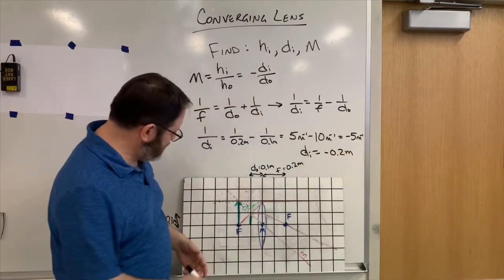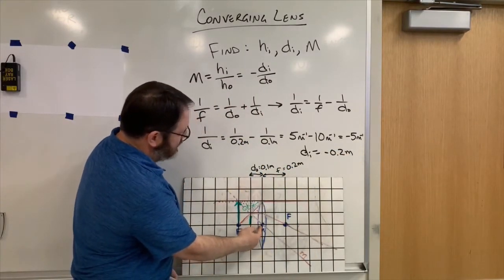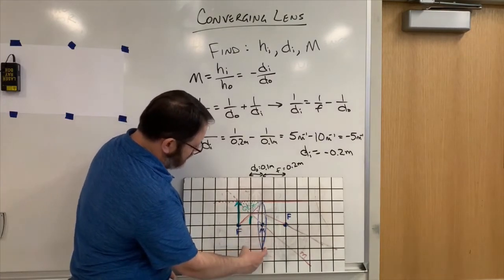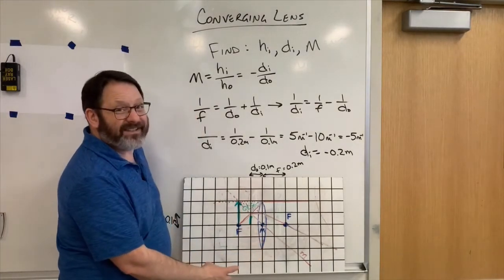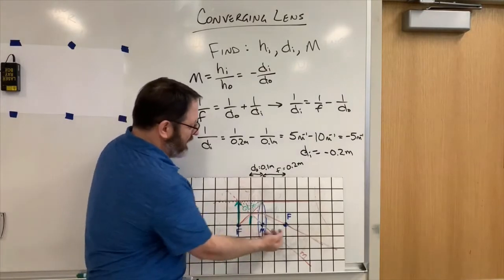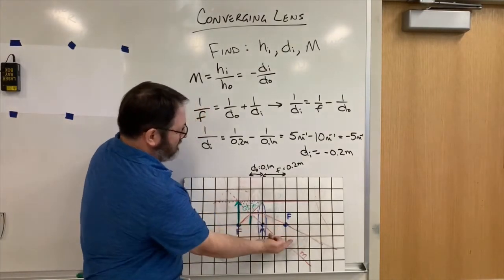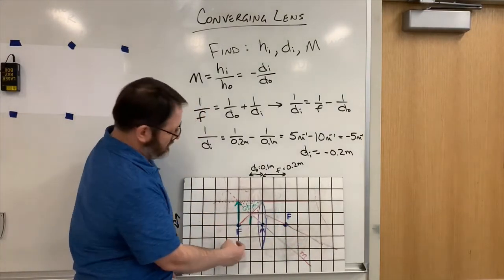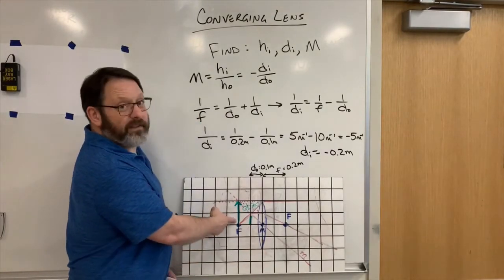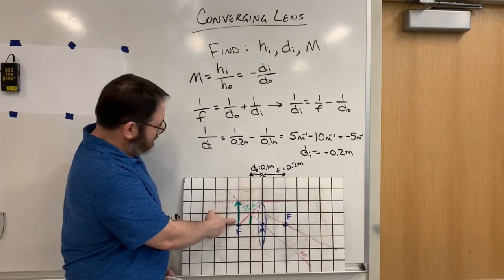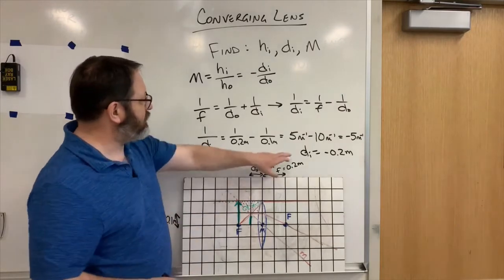So distance to the image, from the lens it should be 0.2 meters away in the minus direction. And remember, in the lens, the minus direction is back on the same side the object was on. So minus 0.2 right there. So the drawing was good. The distance to the image was minus 0.2.